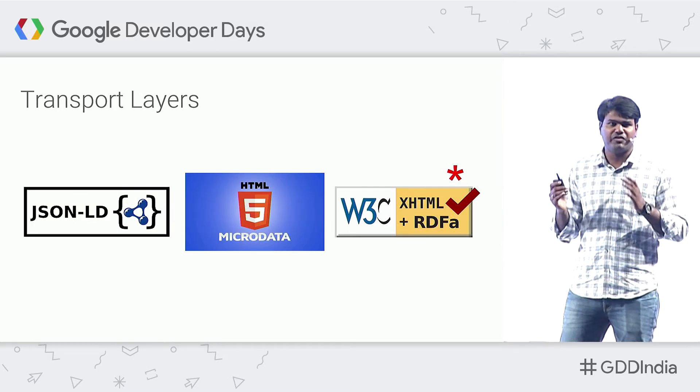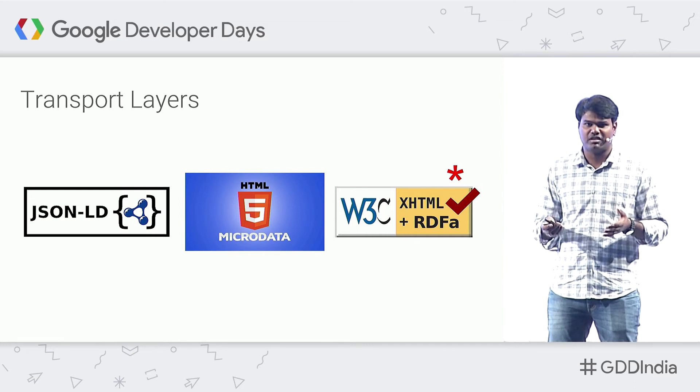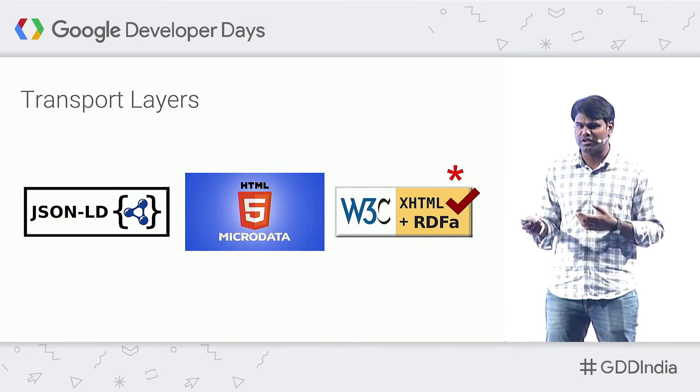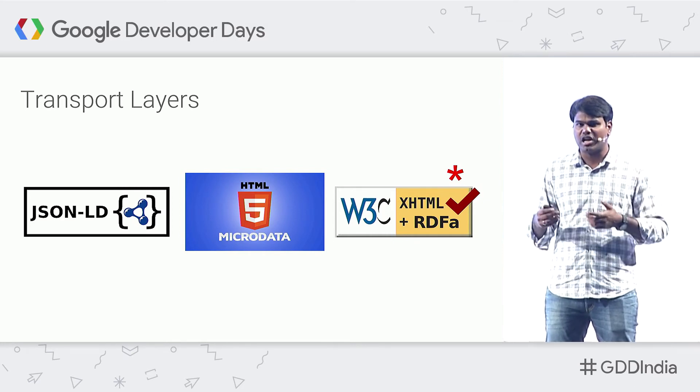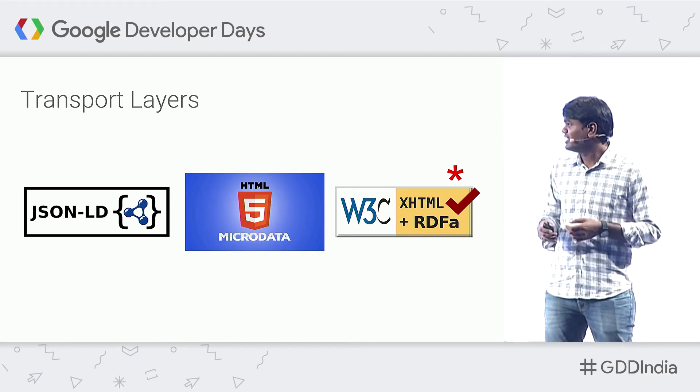So we've seen what markup is and how Google uses it. But how do you send this markup to Google? There are three common transport layers that Google currently supports: JSON-LD, microdata, and XHTML plus RDFA. Google recommends JSON-LD, but if you use microdata or RDFA, that's still fine. These are just syntaxes you use to encode your data.